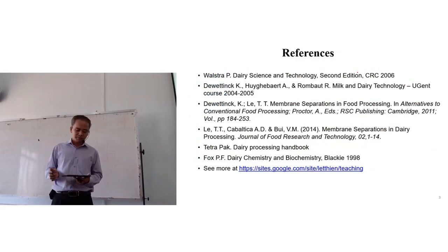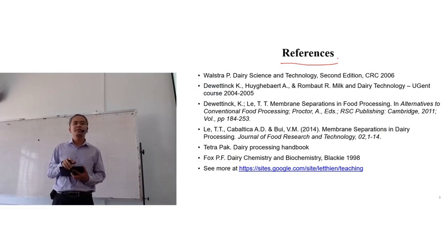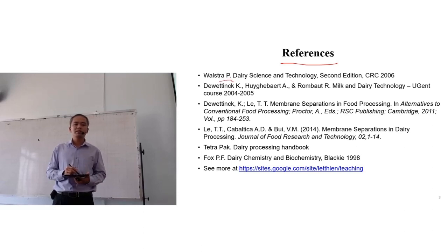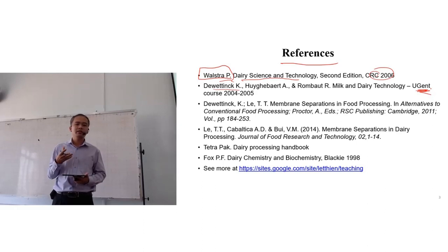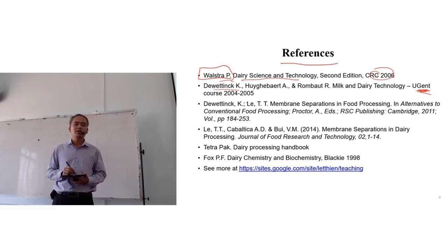These are the main references for this course. The first is a book by Juan Stratpeter, a scholar from the Netherlands, titled Dairy Science and Technology. The second is a course by Professor Koundy Westin at Ghent University in Belgium, where I did my master's. These lectures are actually influenced a lot by his lectures, and I want to acknowledge that.